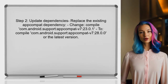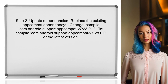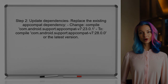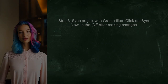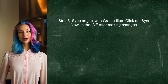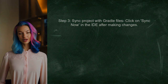Next, the user should update the dependencies in the build.gradle file. They can replace the existing AppCompat dependency with a newer version that is available in the repositories. After updating the dependencies, the user should sync the project with Gradle files by clicking on the Sync Now button that appears in the IDE.